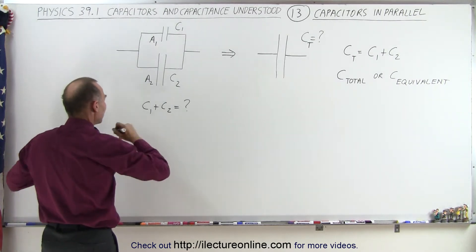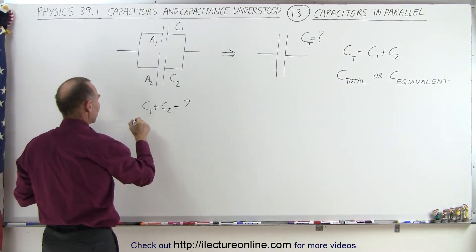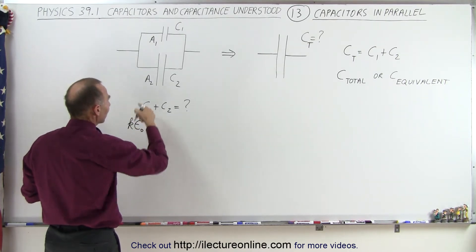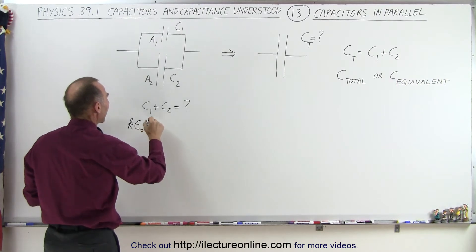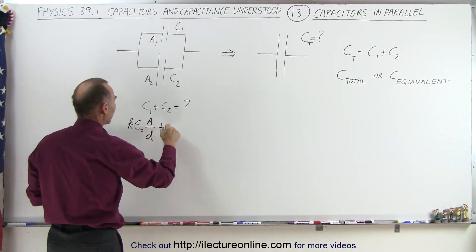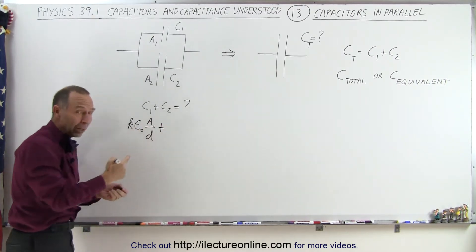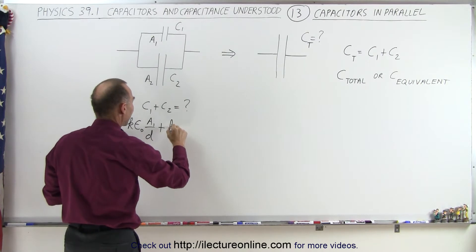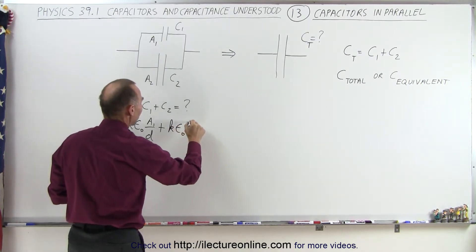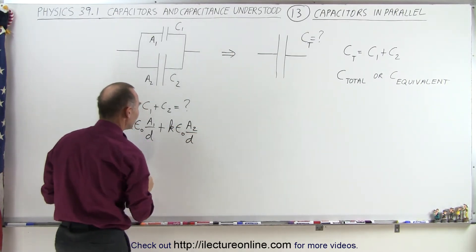if we write that C1 can be written as K times epsilon naught (assuming there may be a dielectric in there) times the area divided by the distance between the plates—and of course we'll call this area 1—and assuming the distance is the same for both, then we have K times epsilon naught A2 divided by D, again the same distance.